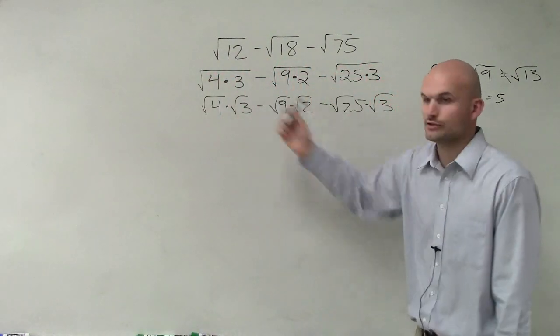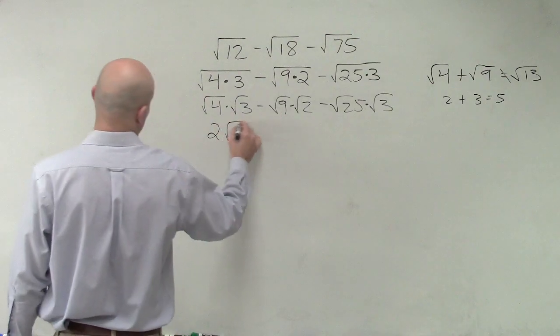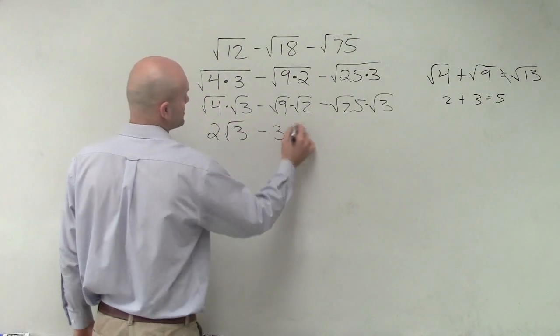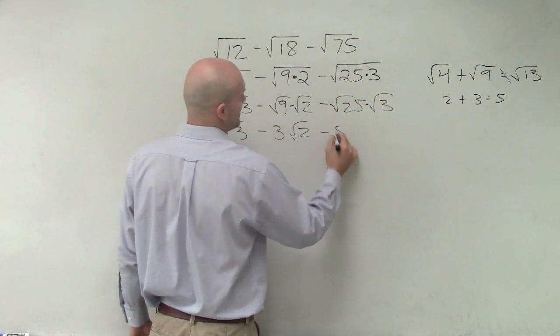So there, do we know what the square root of 4 is? Yes. 2 square root of 3 minus 3 square root of 2 minus 5 square root of 3.